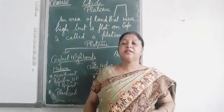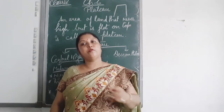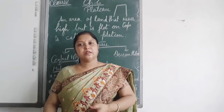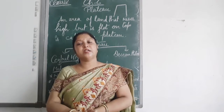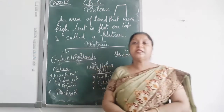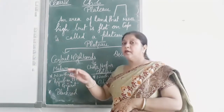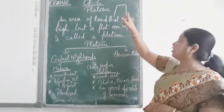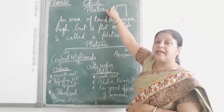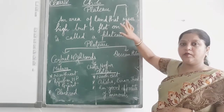Chapter number 6 — Plateau. But before starting the chapter, I want to ask you: what is a Plateau? Plateau is a land that rises high. Look at this picture. Suppose this is a picture of land, and then it rises high but is flat on the top. It is called a Plateau.